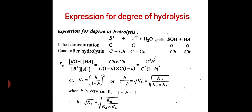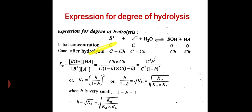Next is the expression for degree of hydrolysis, shown by H. The reaction is: B+ and A− react with water to form BOH and HA. Before hydrolysis, the initial concentration of B+ is C and that of A− is also C, while the concentrations of BOH and HA are zero. After hydrolysis, the concentration of HA is CH and that of BOH is also CH, while the concentration of A− and B+ are each C − CH.